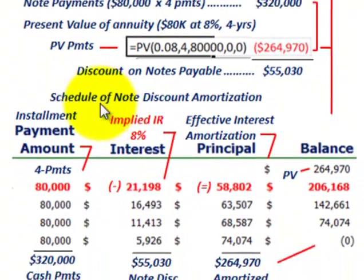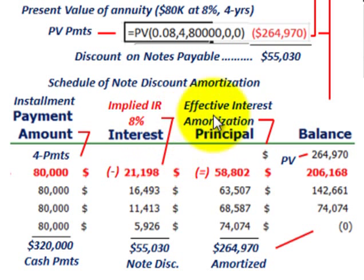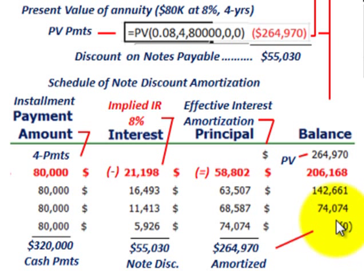Next, we look at the note discount amortization schedule for the $55,030 discount, using the effective interest method. Our schedule starts with the beginning balance — the present value of those payments of $264,970 — and we amortize down through four payments to reach a zero balance at the end of the fourth year.